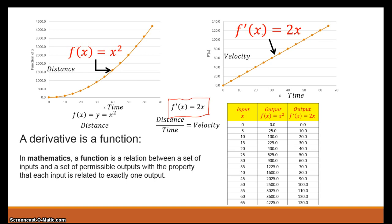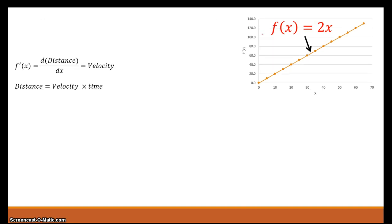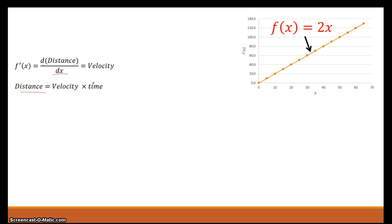Now let's say we were given nothing but a function and wanted to find out where it came from. In this case we have a velocity — a function that describes velocity. We have a basic idea from physics that the instantaneous velocity is the differential of the distance with respect to time, with x representing time. If you multiply your time times the velocity, you would end up going back to the distance. So how does this go back to our function — and that's where anti-derivatives come in.